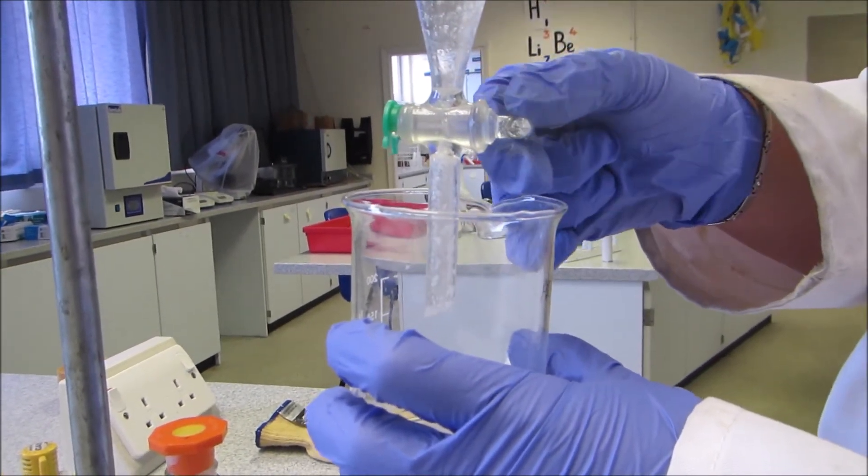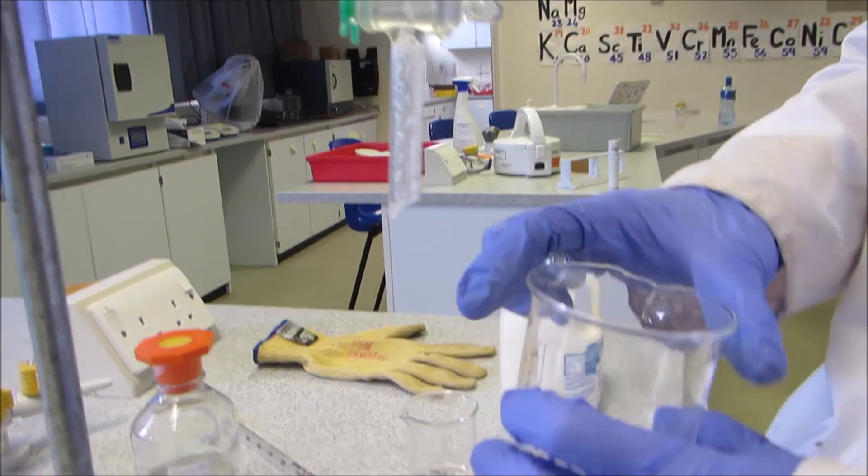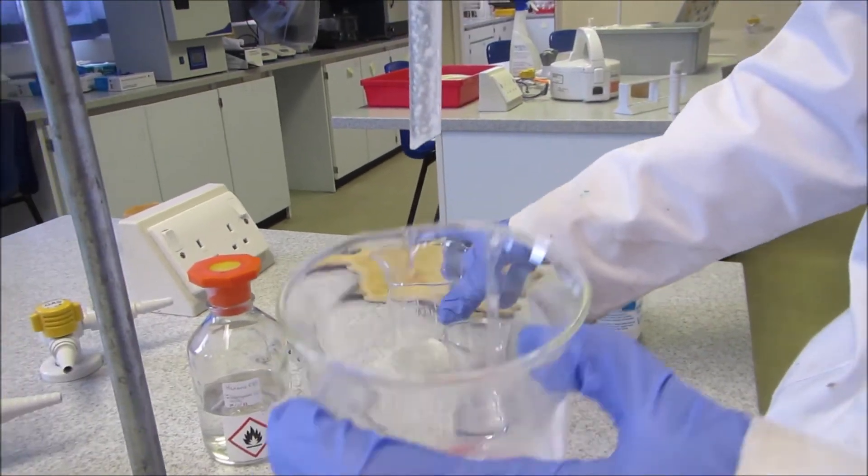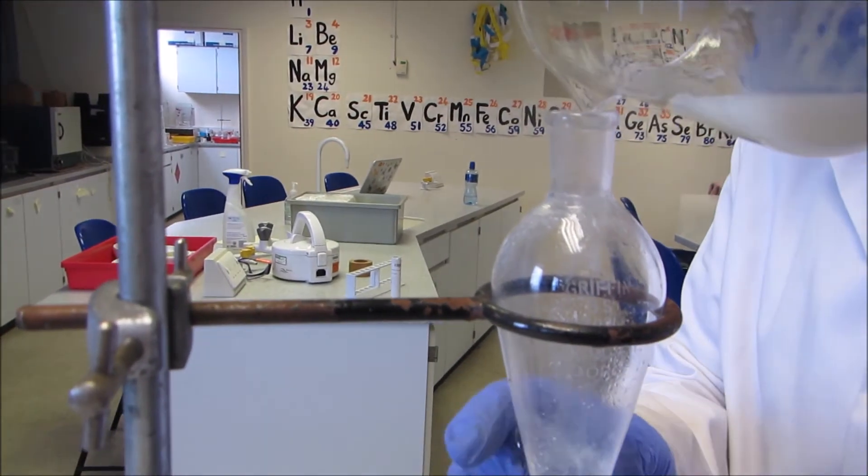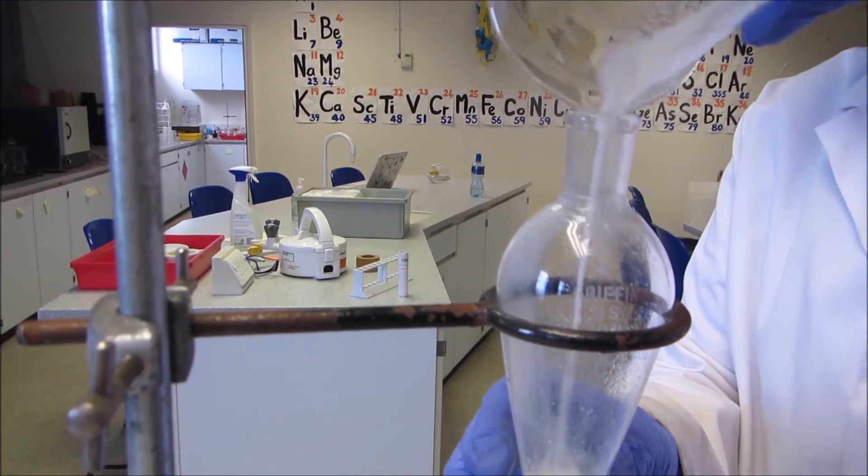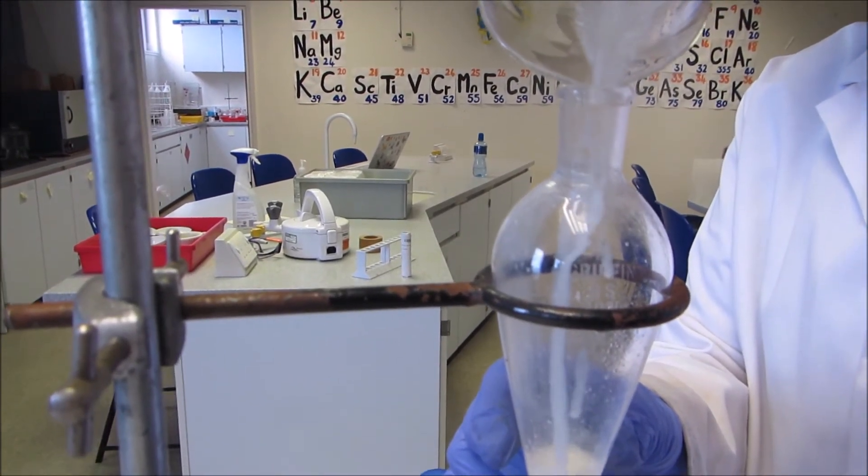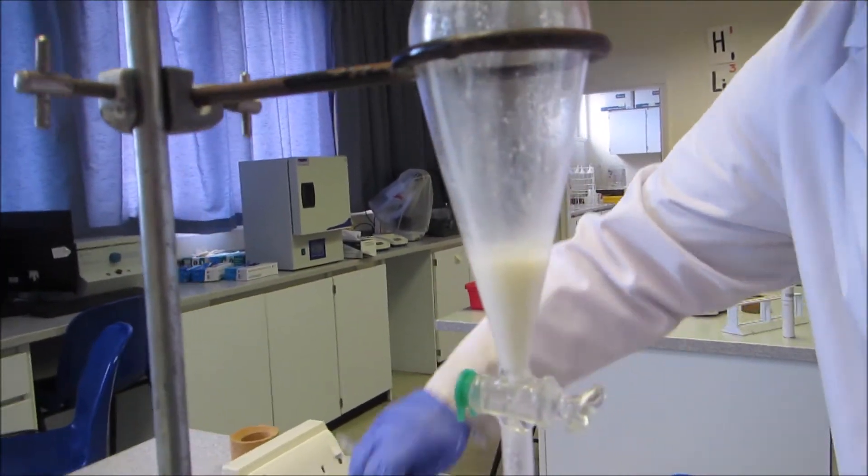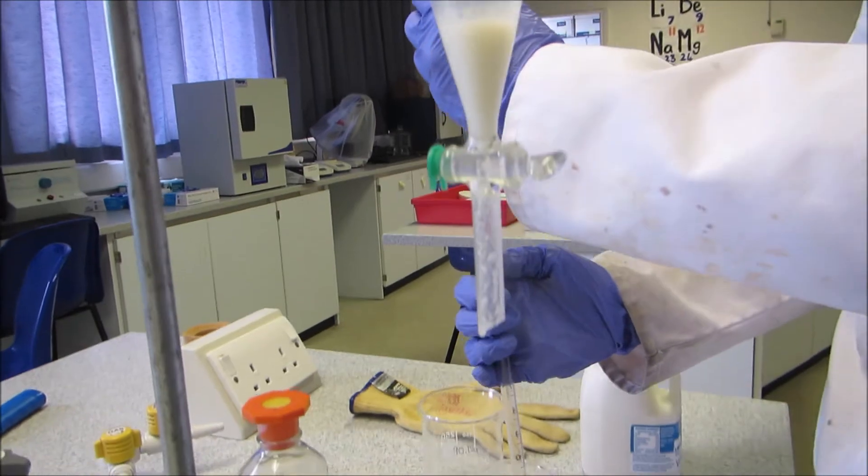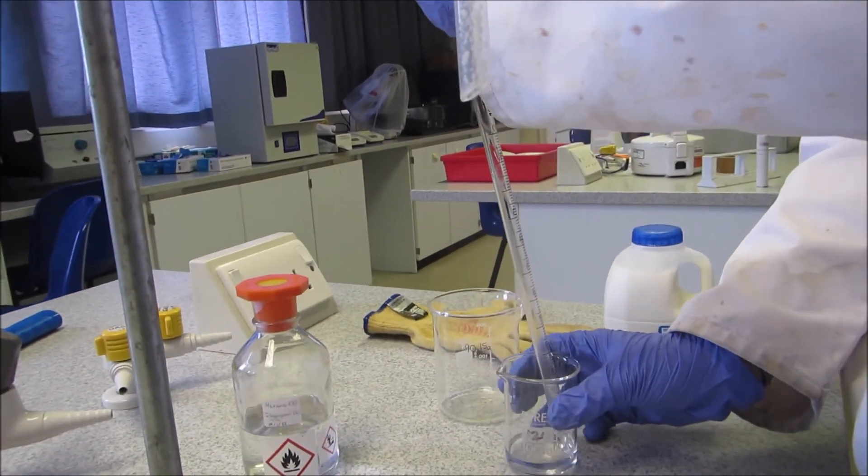So that's the first extraction. That will have got some of the fat from milk, but we want to make sure we've got all of it, so I'm just going to put the milk layer back in. That was our bottom layer, as much as I can. And then measure out another 7ml of our solvent and do a second extraction.